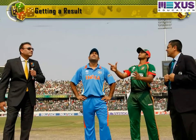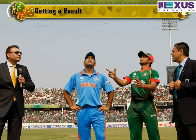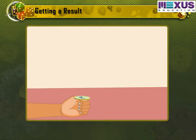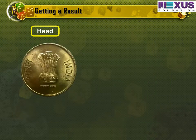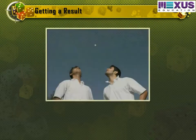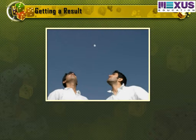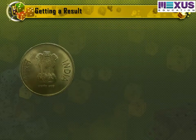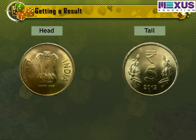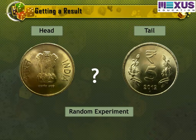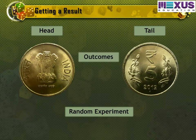You might have seen that before a cricket match starts, the captains of the two teams go out to toss a coin to decide which team will bat first. When a coin is tossed, there are two possible outcomes: heads or tails. Imagine that you are the captain of one team and your friend is the captain of the other team. You toss a coin and ask your friend to make the call. Can you control the result of the toss? No, that is not possible. Such an experiment is called a random experiment. Heads or tails are the two outcomes of this experiment.